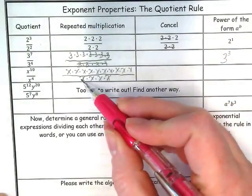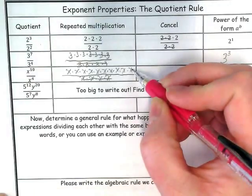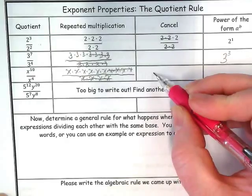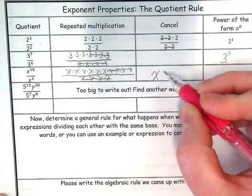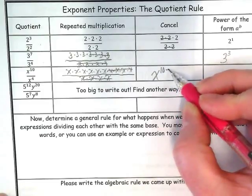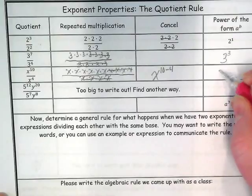We can only cancel what's in common - there's four in the base that we can cancel, and that means we can also cancel four in the numerator. What's really happening here is we're taking 10 minus the 4, and what do we end up with? X to the sixth.